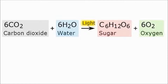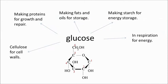So plants use carbon dioxide and water to build glucose molecules. What's so special about glucose? As well as using glucose for energy, a plant can store glucose in the form of starch or fats. It can be converted into proteins for growth and repair. It can be joined into long, tough strands to form cellulose for cell walls.